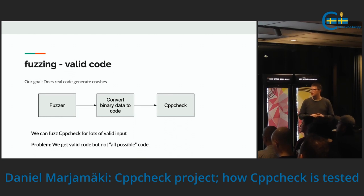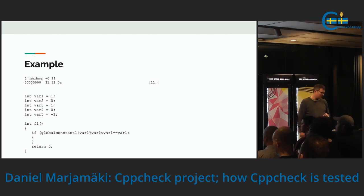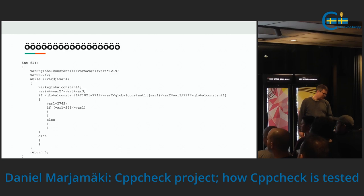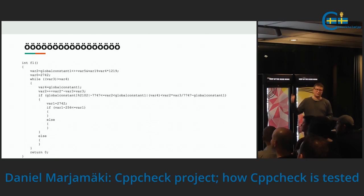A minor problem is that we don't fuzz all possible code — there are certain types of code we never get through this method. Here is an example: three bytes, 24 bits of information, that generate this code. Here is another example with about 100 bits of information. The fuzzer sometimes generates 10 kilobytes of code, so it can get quite big.